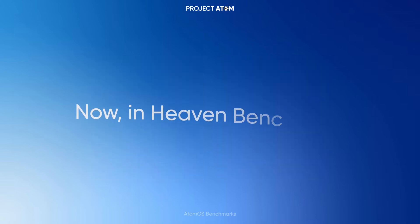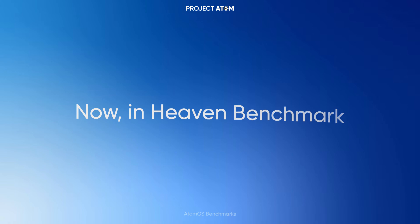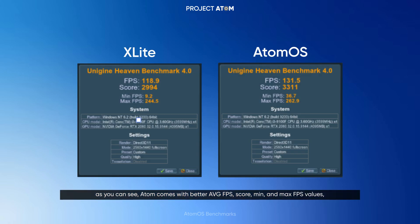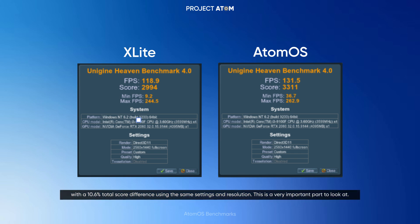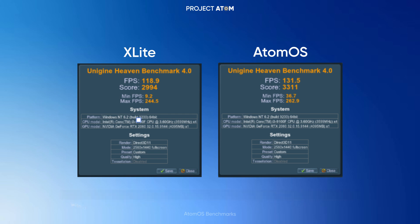Now, in the Heaven Benchmark, as you can see, Atom comes with better average FPS, score, min and max FPS values, with a 10.6% total score difference using the same settings and resolution. This is a very important part to look at.